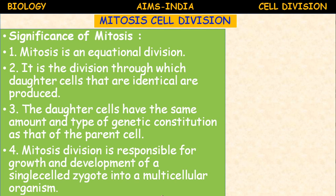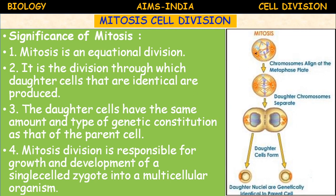The daughter cells have the same amount and type of genetic constitution as that of the parent cell — the same genetic material is passed to the daughter cells. Mitosis is responsible for growth and development of a single-cell zygote into a multicellular organism. Growth is cell division and cell differentiation. After fertilization, the zygote divides by mitosis and increases the number of cells, with daughter nuclei genetically identical to the parent cell.